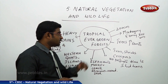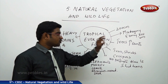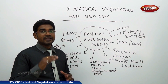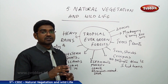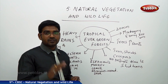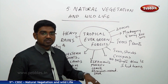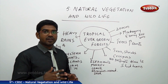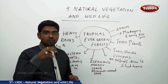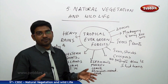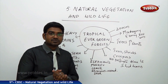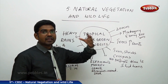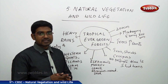Another specialty of the tropical evergreen forest is that the trees grow as tall as 60 meters and above, creating different layers — a multilayered structure of trees, shrubs, and creepers joined together, where even sunlight finds it difficult to reach the land below. The precious wood found here includes mahogany, ebony, rosewood, and in some parts, sandalwood.